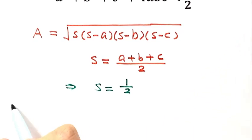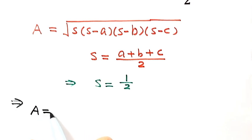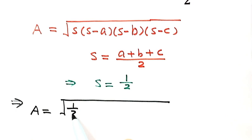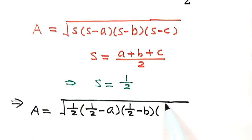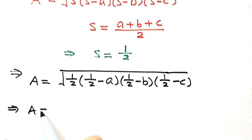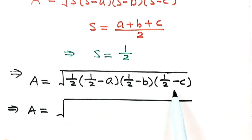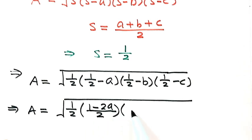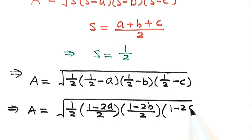So then we have: A equals the square root of 1 half times (1 half minus A) times (1 half minus B) times (1 half minus C). Making a common denominator for each factor, this becomes: 1 half times (1 minus 2A over 2) times (1 minus 2B over 2) times (1 minus 2C over 2).